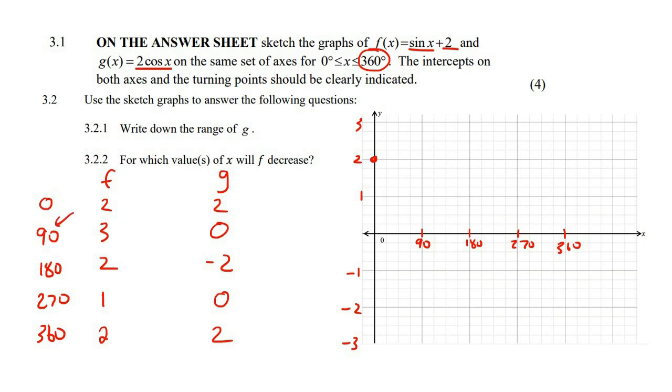Then when x is 90, its y value is three. So when x is 90, its y value is three. When x is 180, its y value is two. When x is 270, the y value is one. And then when x is 360, the y value is two. There we go. Draw the curve. So that would be the graph of f.